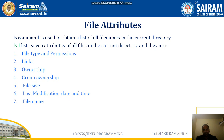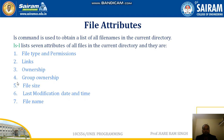Now we are going to talk about the file attributes in detail. There are seven file attributes that every file has whenever a file is created in a Unix operating system — seven attributes will be associated with that file. We can display those seven attributes using the ls -l command. The seven attributes are: first, file type and permission; second, link; third, ownership; fourth, group ownership; fifth, file size; sixth, last modification date and time; and seventh, file name.